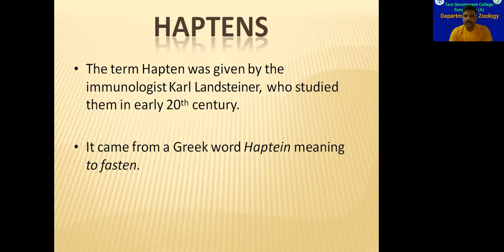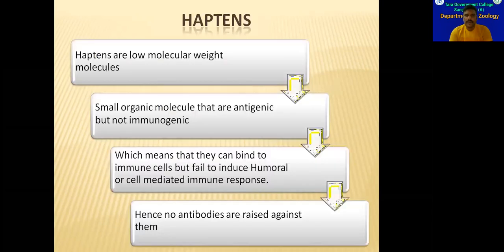Haptens are low molecular weight. This is a small organic molecule. It is a small carbon product. This has antigenic property, but it is not immunogenic. In this class, we will discuss the topic of antigenicity and immunogenicity.